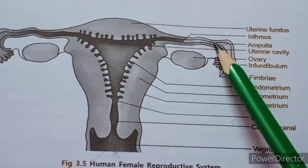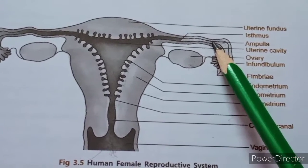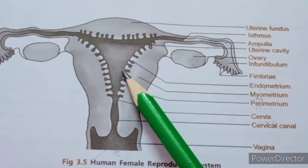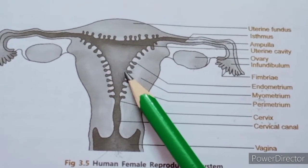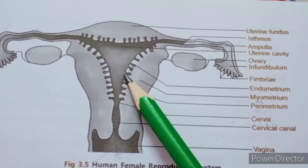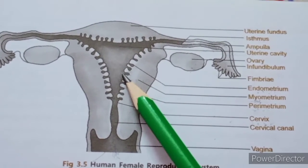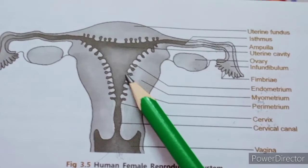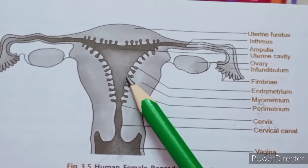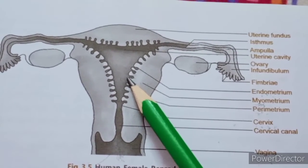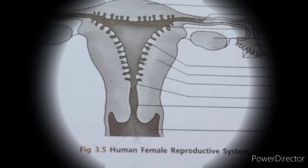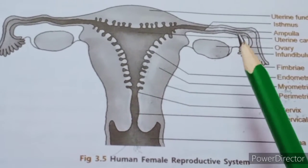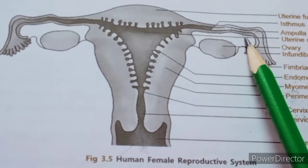The fertilized egg or zygote is transferred to the uterus for the process of implantation. After that, a tissue connection between the mother and the child develops, which is known as the placenta, and it helps send nutrients from the mother to the child.